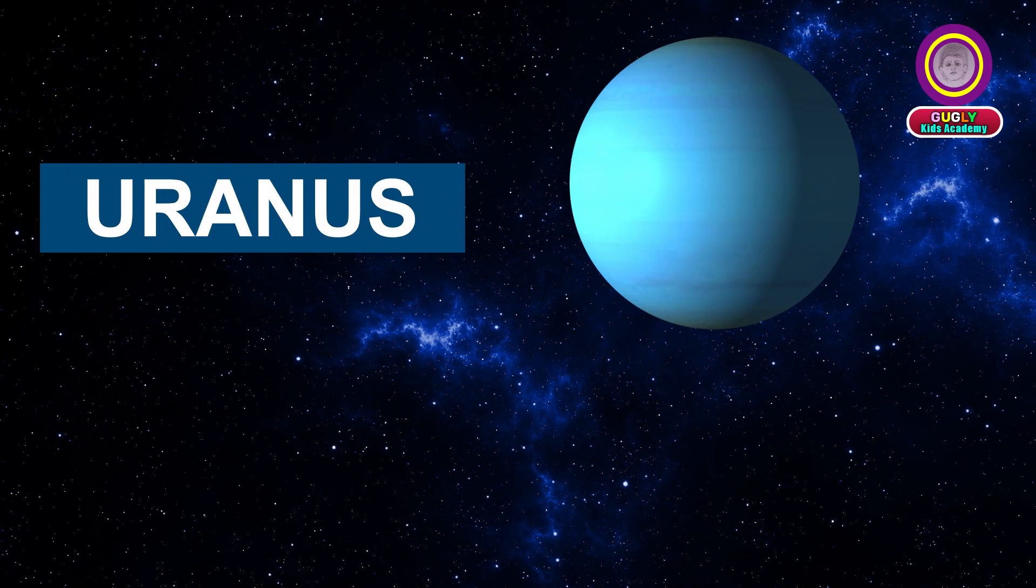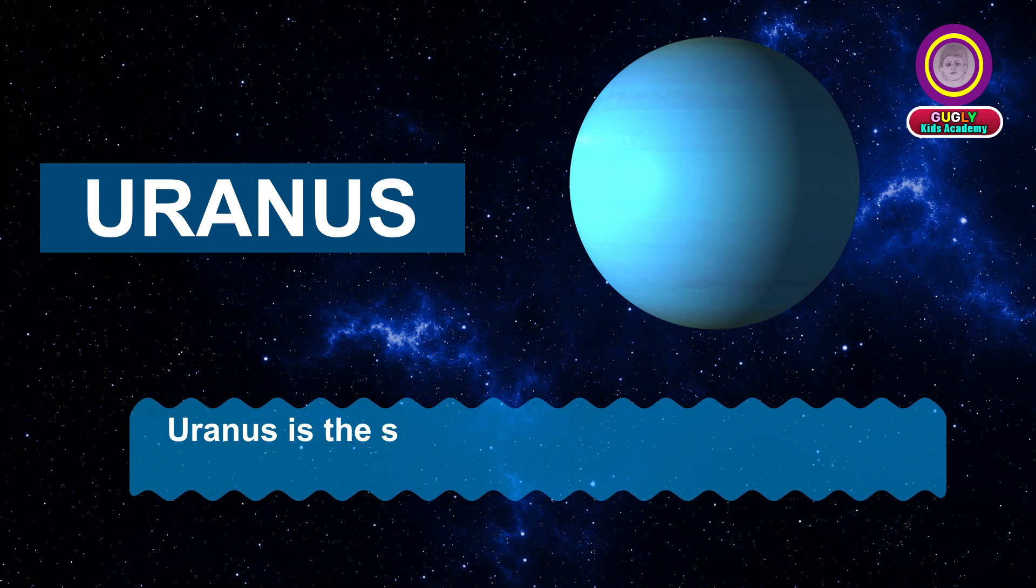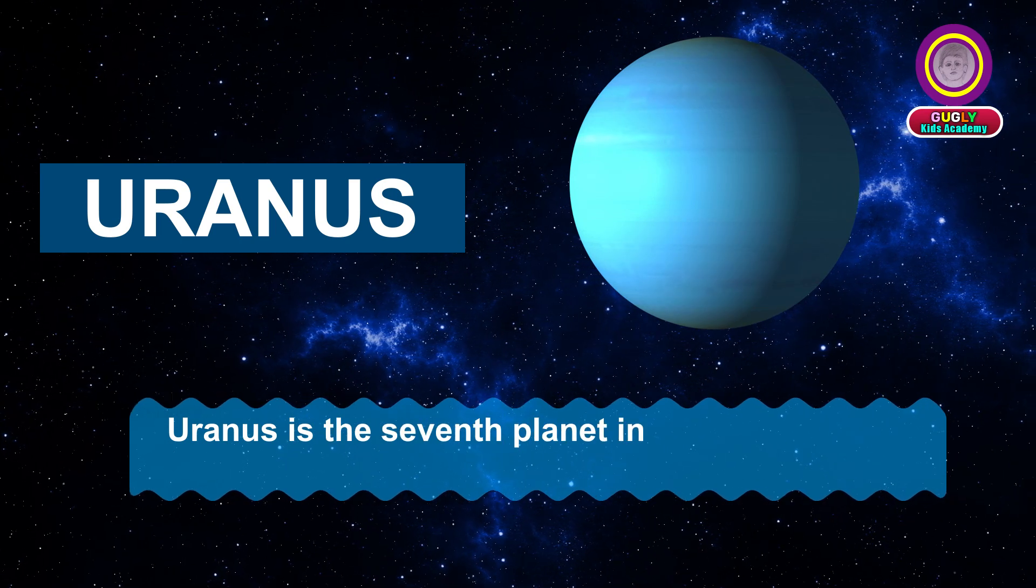Uranus is the seventh planet in the solar system.